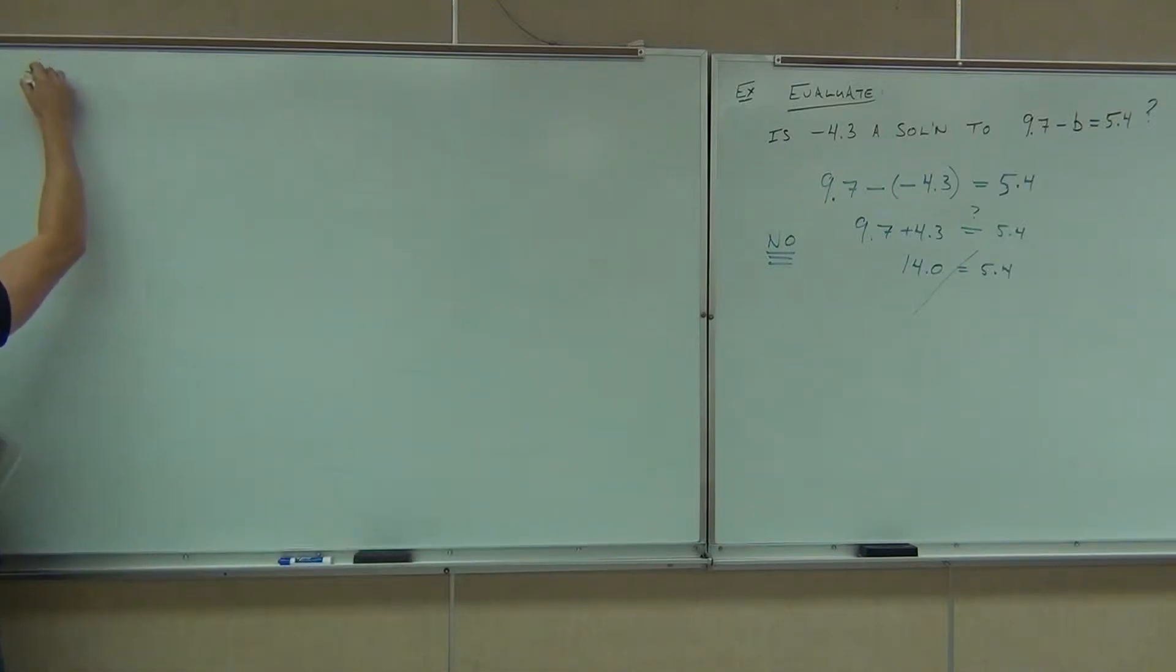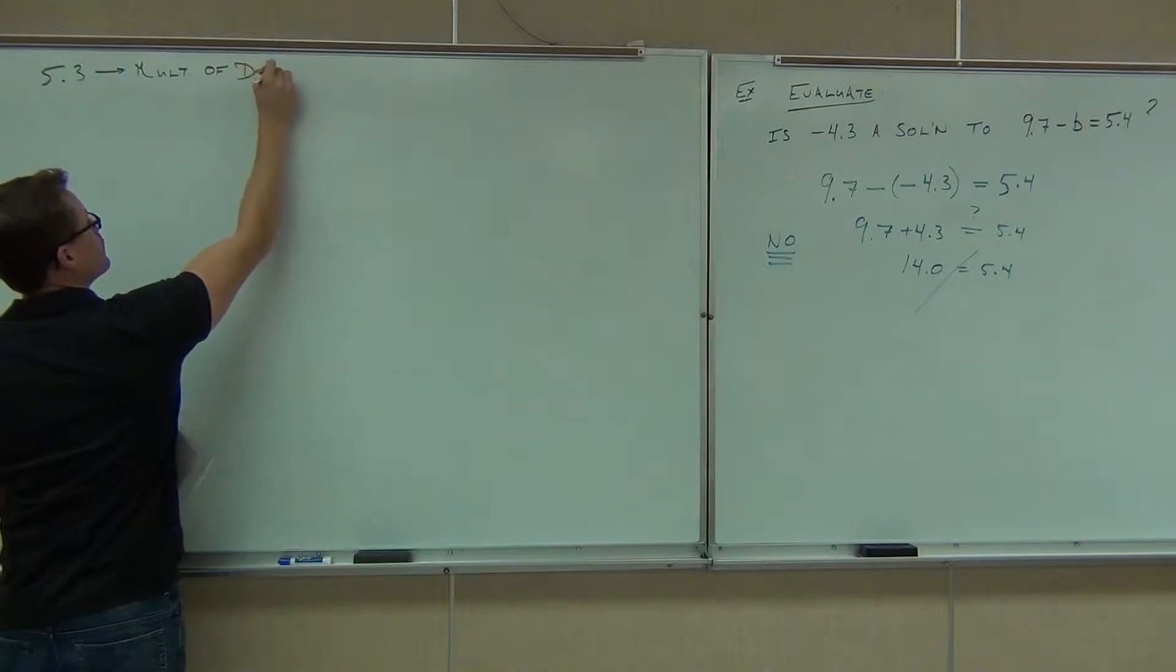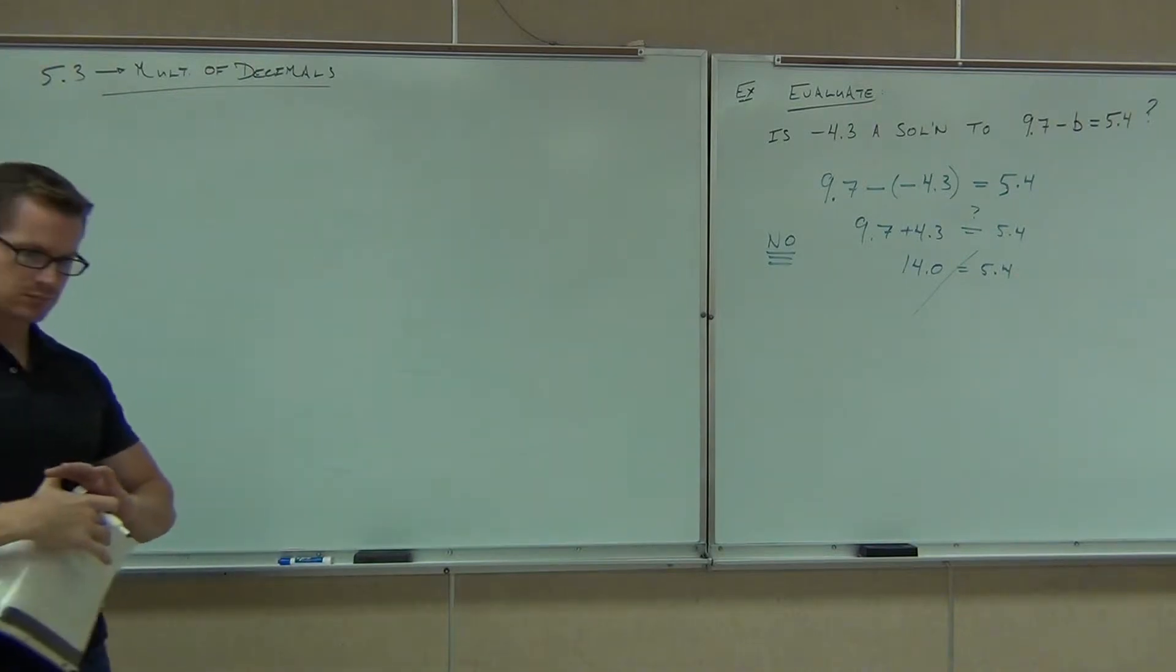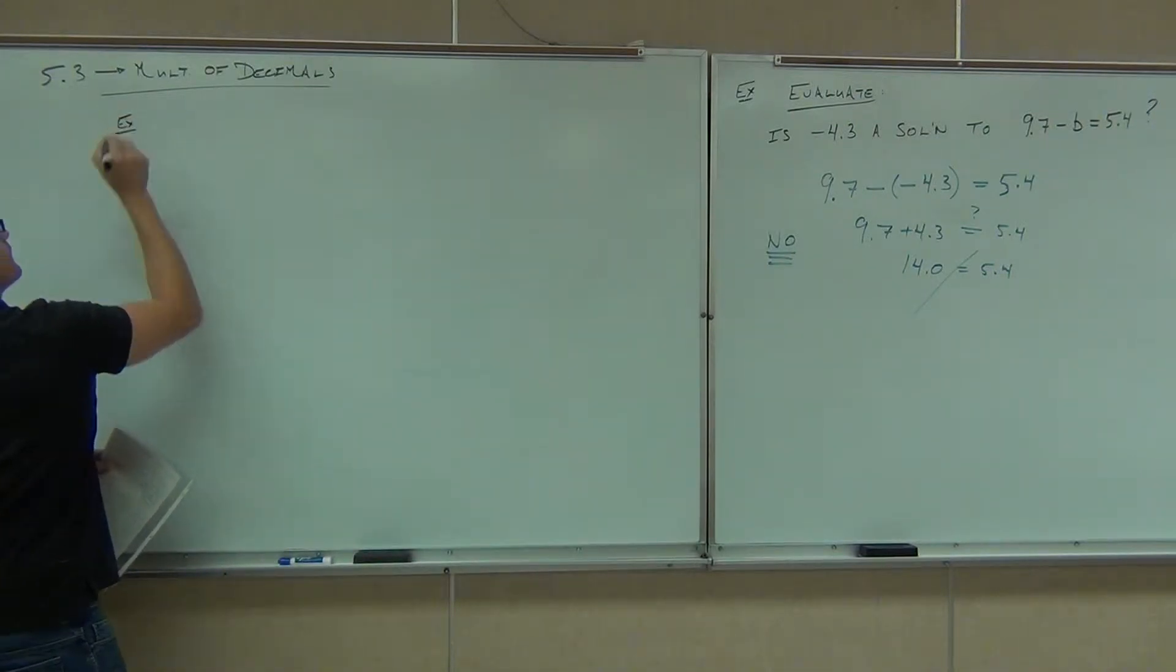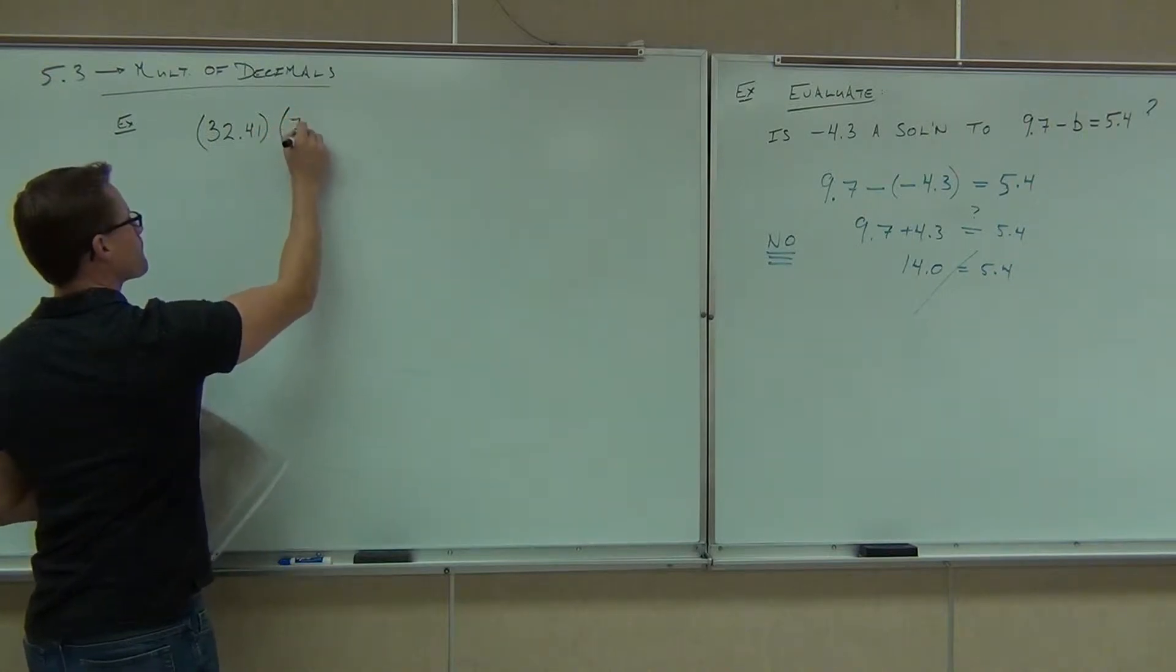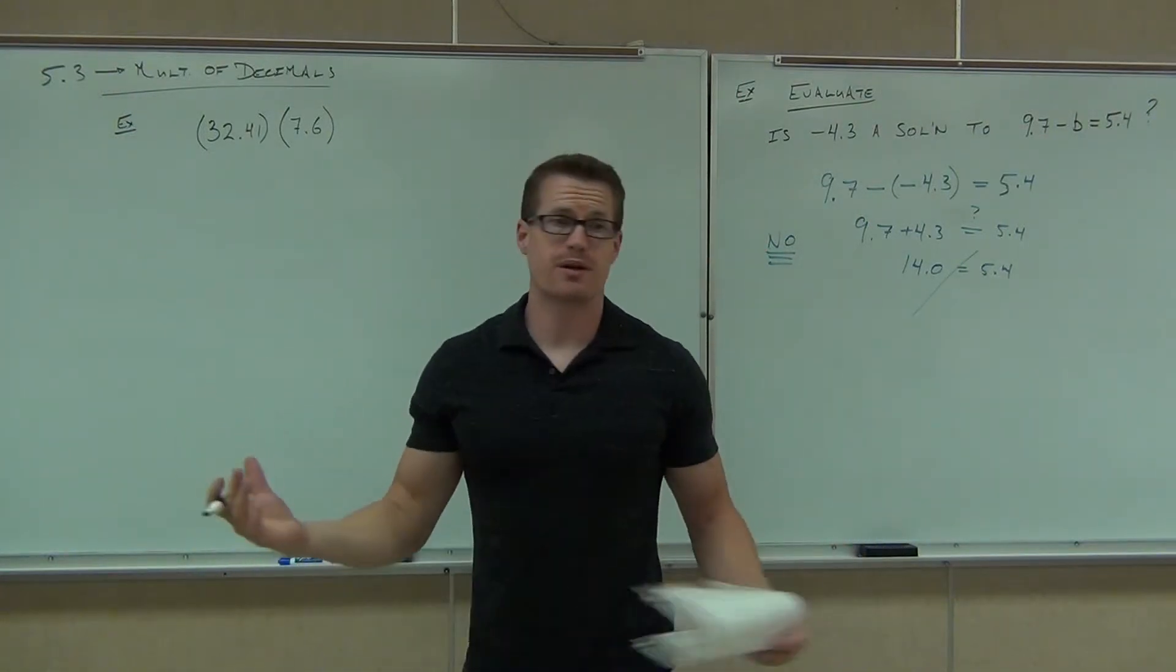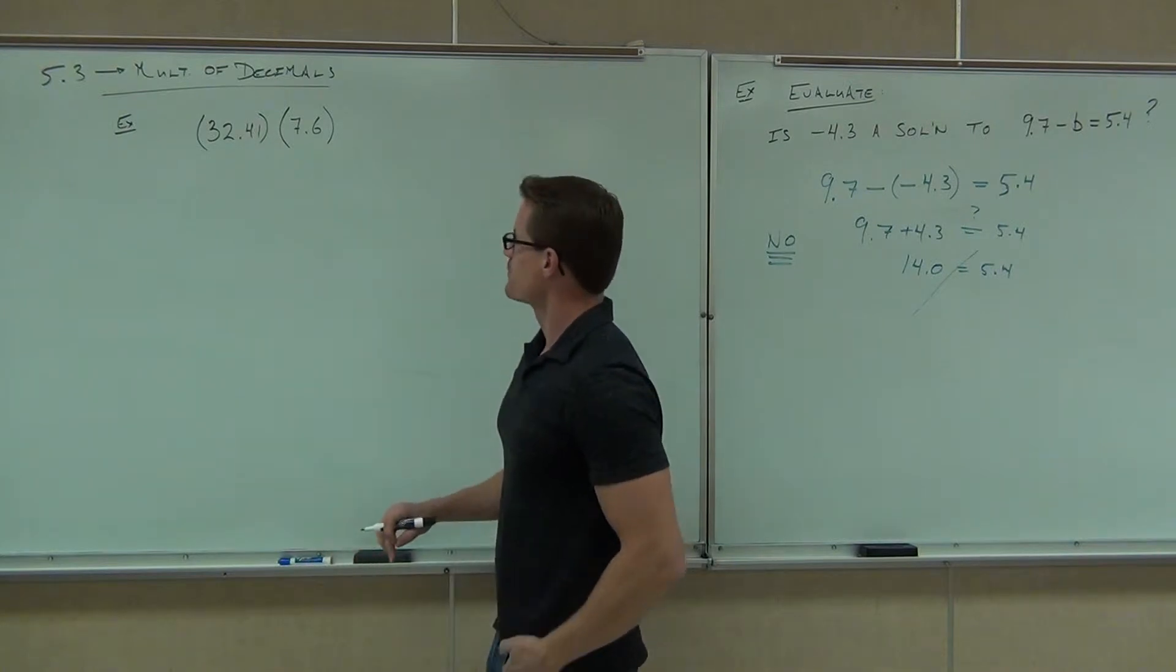So let's do 5.3. What operation do we have when they put two parentheses next to each other like that? Now we're multiplying, of course we're multiplying numbers, decimals are numbers, but how in the world are we supposed to multiply 32.41 times 7.6?